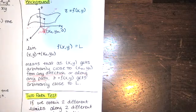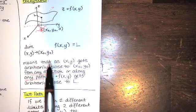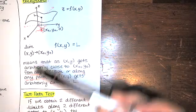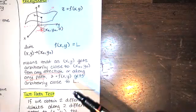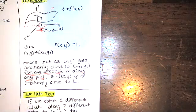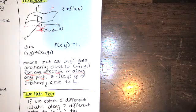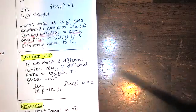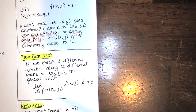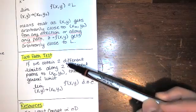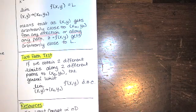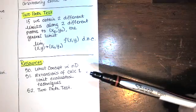One way that we can prove a limit does not exist is to use what's called the two-path test. Just like in Calc 1, when you had to check that the limit from the left and the right both existed and were the same — here, we can prove that a limit does not exist by showing there are two different ways to go to that point and get different limits. If we obtain two different limits along two different paths, then this limit in general does not exist.